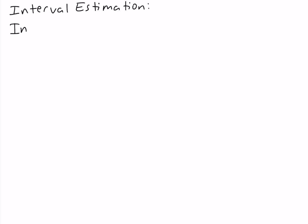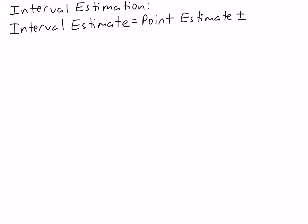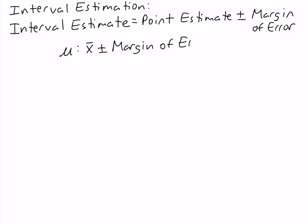An interval estimate has two parts to it: the point estimate plus and minus a margin of error. For example, if we want to construct an interval estimate of the population mean, we take the point estimate of the population mean, which is the sample mean, and we add and subtract the margin of error.